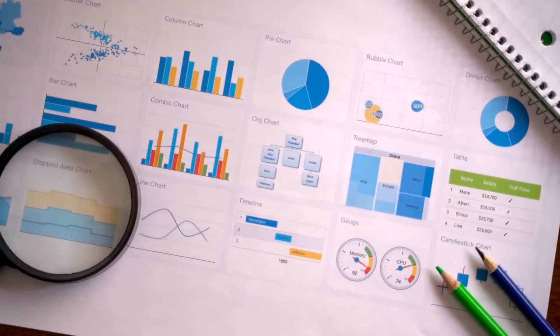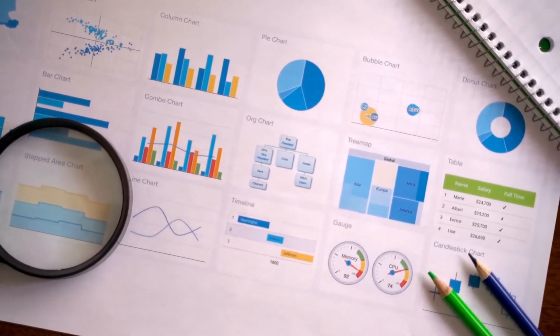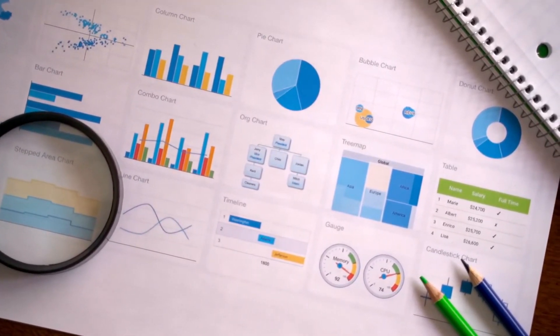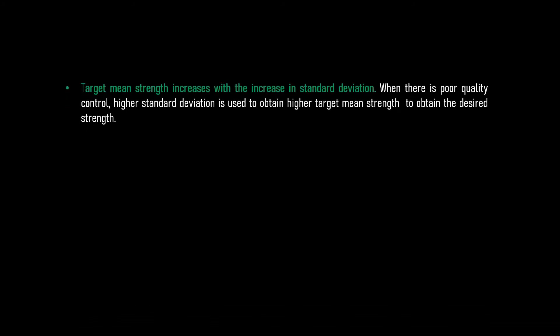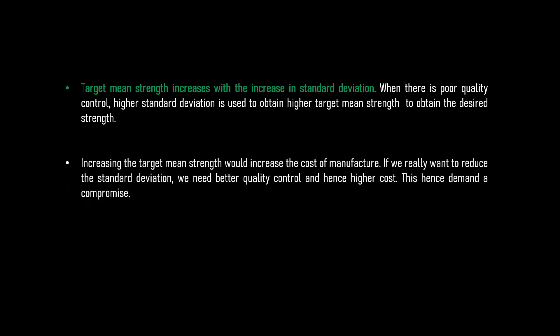It is very much clear that the target mean strength increases with the increase in standard deviation. When there is poor quality control, higher standard deviation is used to obtain higher target mean strength to obtain the desired strength. Increasing the target mean strength would increase the cost of manufacture. If you really want to reduce the standard deviation, we need better quality control and hence higher cost. So, this hence demand a compromise.